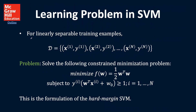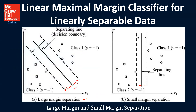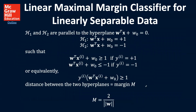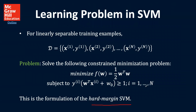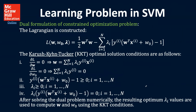For linearly separable training examples, we have a data set with an input and a corresponding output up to one through N. The problem is we want to solve the following constrained minimization problem — we want to be minimizing this equation, and this is the formulation of the hard margin support vector machine. A hard margin support vector machine means that you have to keep data out of this no-man's land in the middle. Perhaps the data will be such that we can use a hard margin SVM; otherwise we're going to have to think about some other approach.